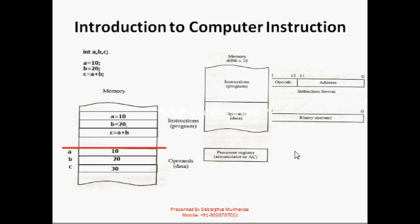So for this architecture, our instruction will have total 16 bits of information, and our binary operand — meaning these variables — will also have 16 bits of information. Hopefully, this concept is very clear to you. Thank you.